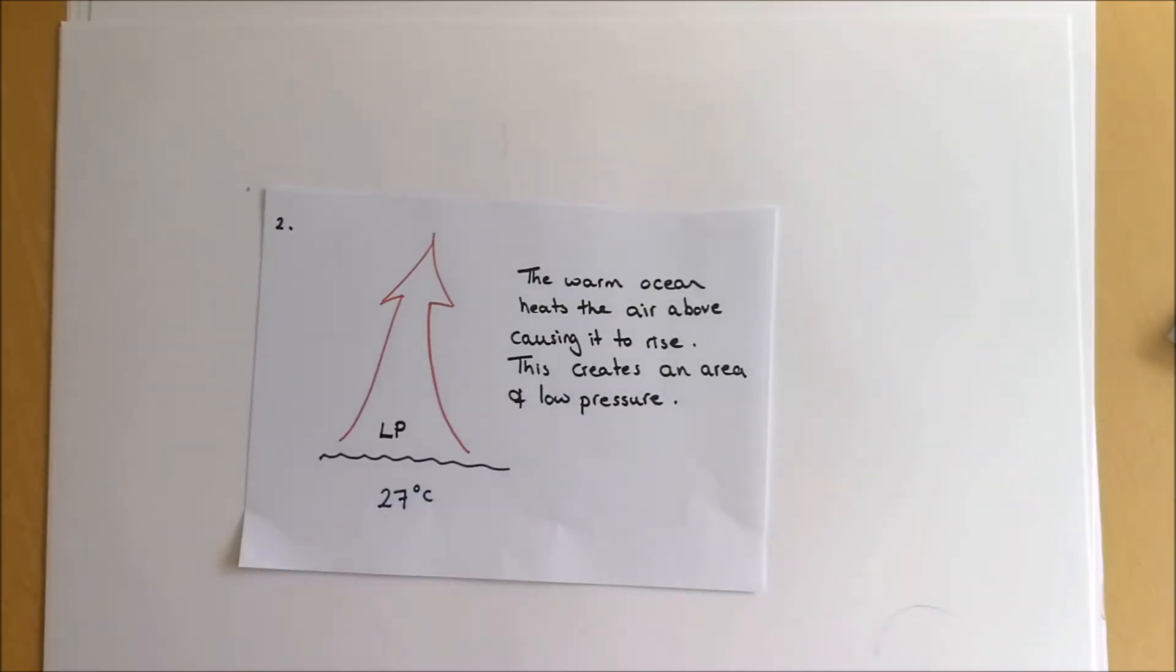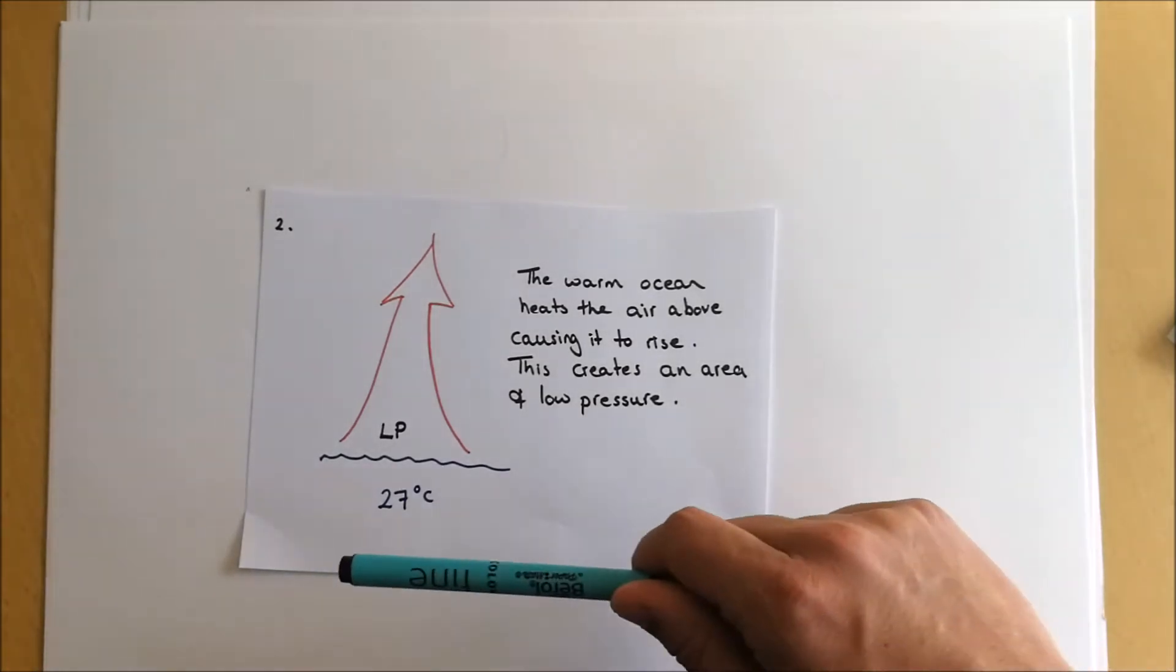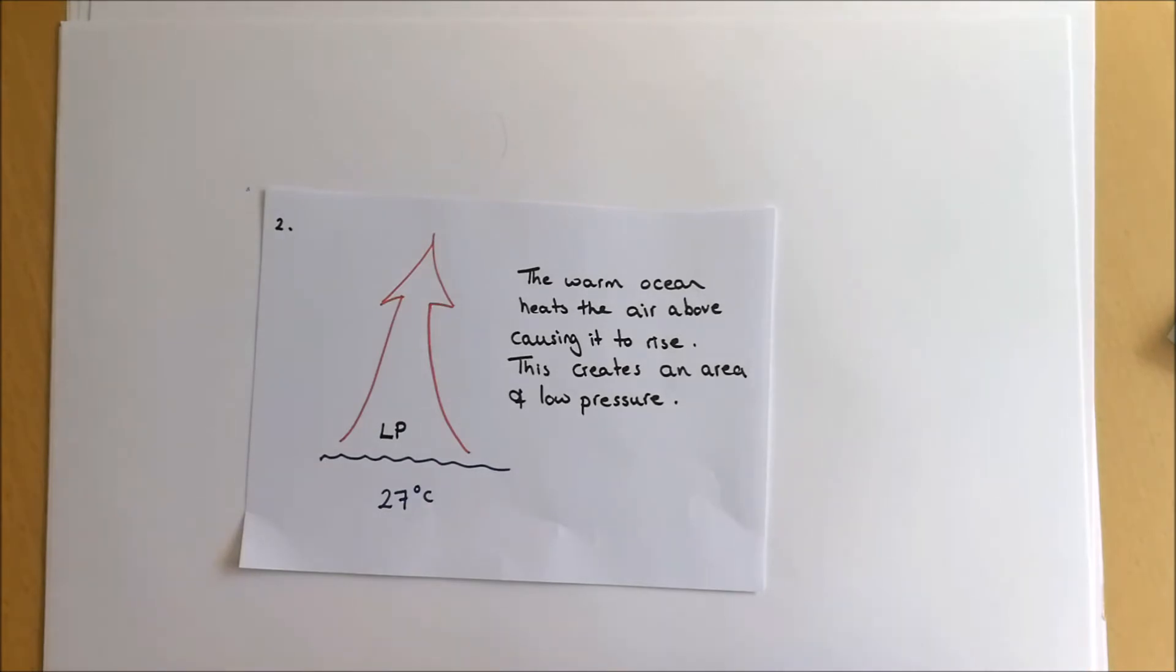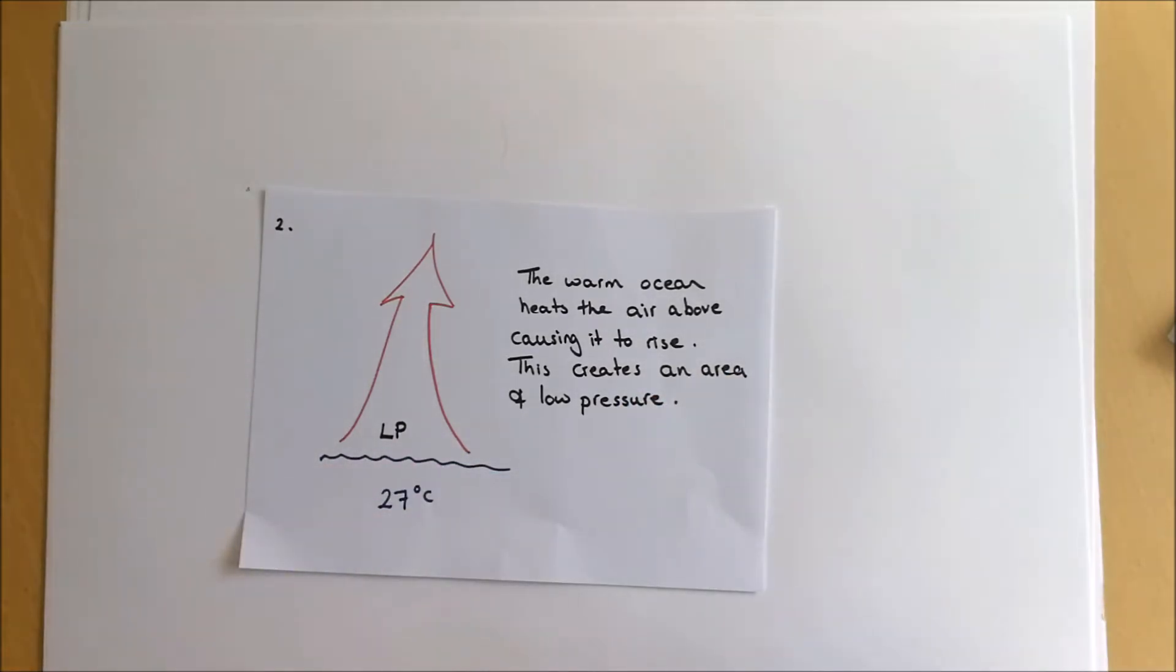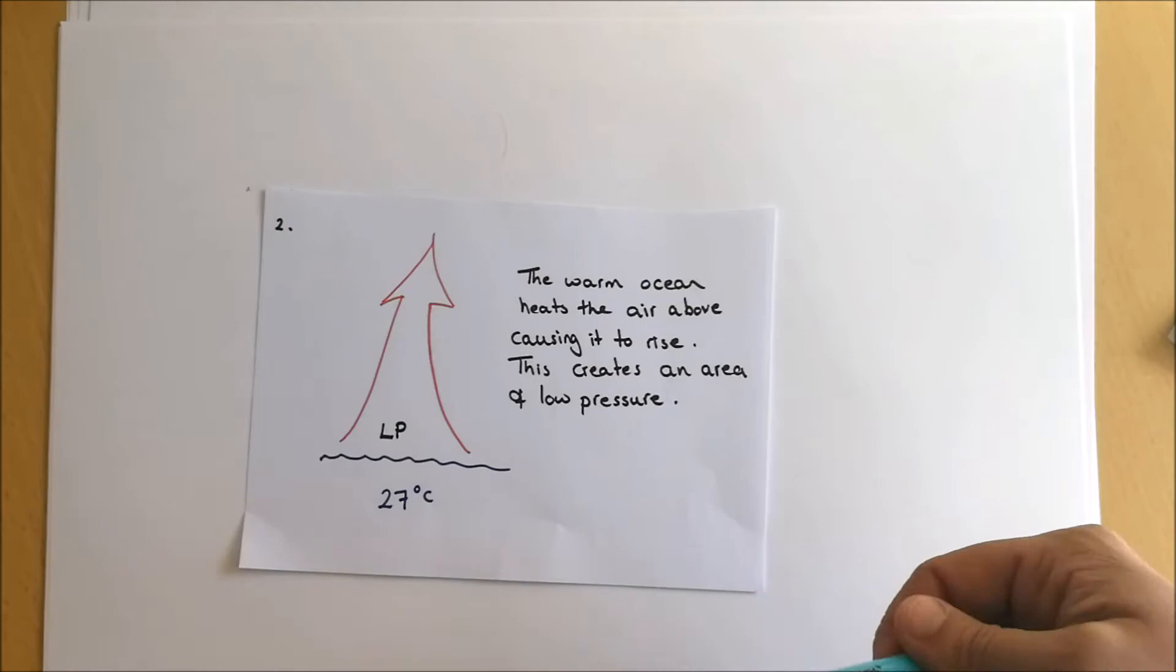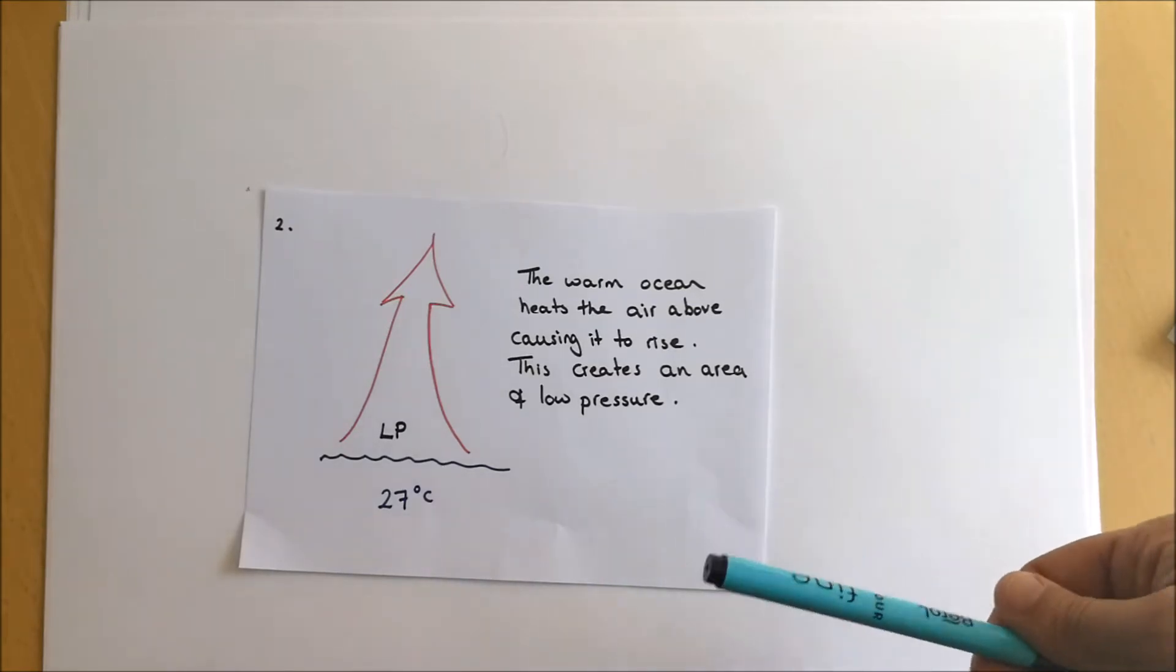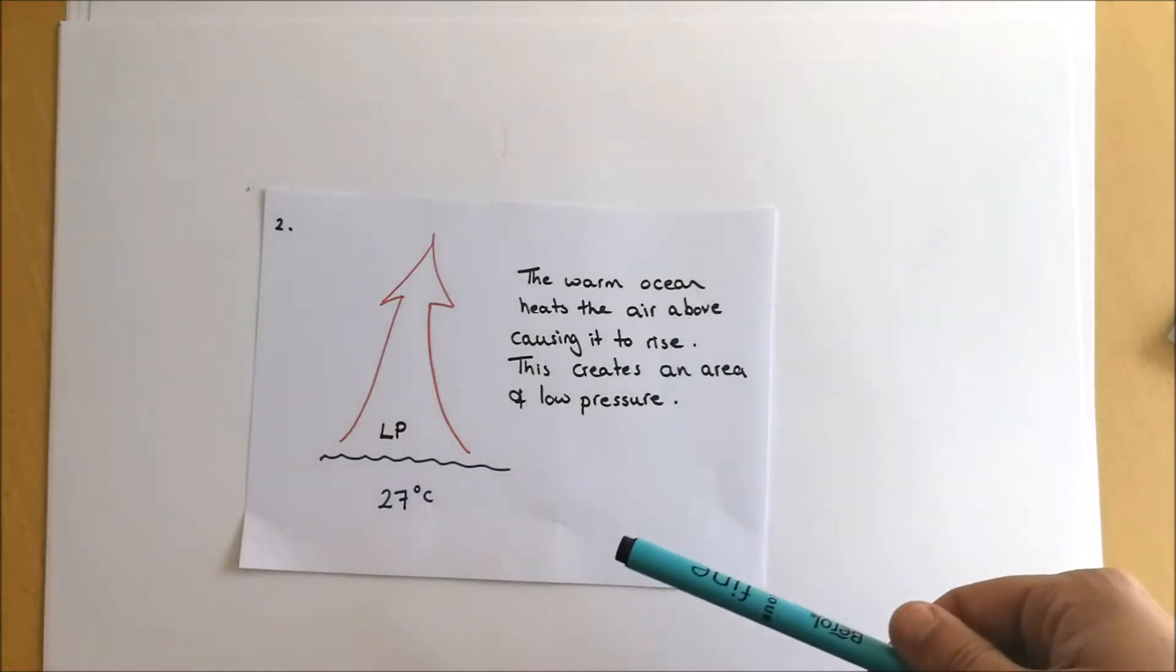Now let's start getting into how these conditions lead to a hurricane forming. We start off with that fundamental 27 degrees Celsius ocean temperature. This is incredibly important. What it does is it heats the air directly above the ocean. That warm air as we know becomes less dense and rises, creating a significant area of low pressure over the oceans.